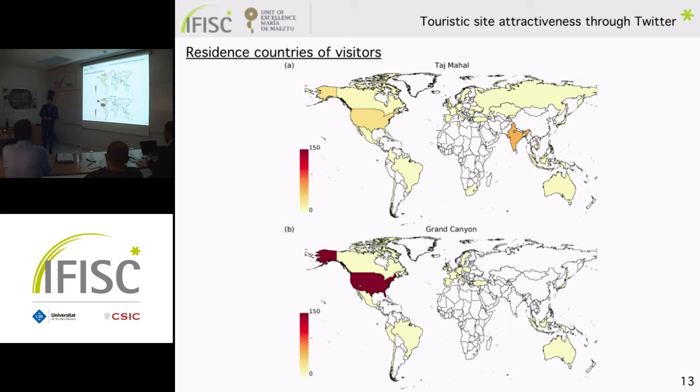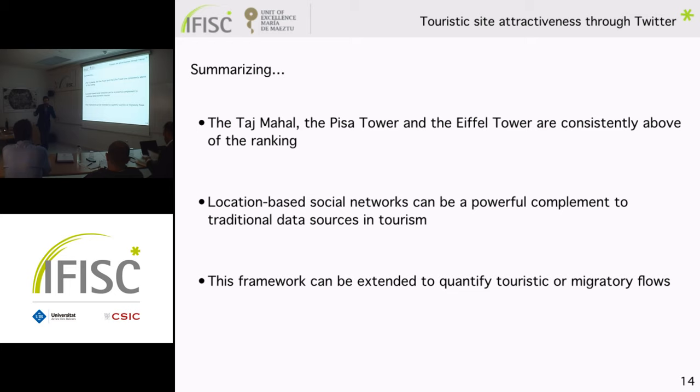In summary, according to our metrics, the Taj Mahal, the Pisa Tower, and the Eiffel Tower are the most attractive sites among the 20 studied. We believe this is a first proof of the usefulness of location-based social networks to quantify touristic flows. Possible extensions include adding penetration rates to mimic real touristic flows by region — work we are currently doing — and applying a similar framework to quantify migratory flows.